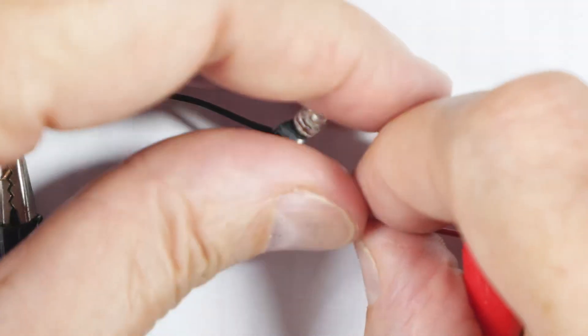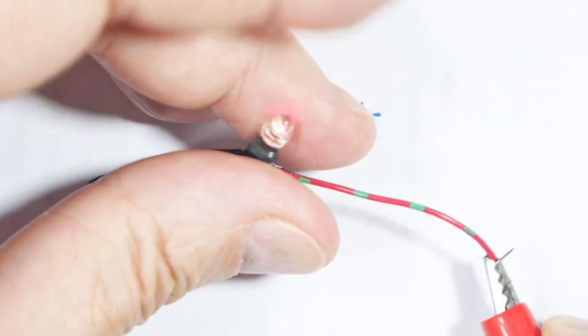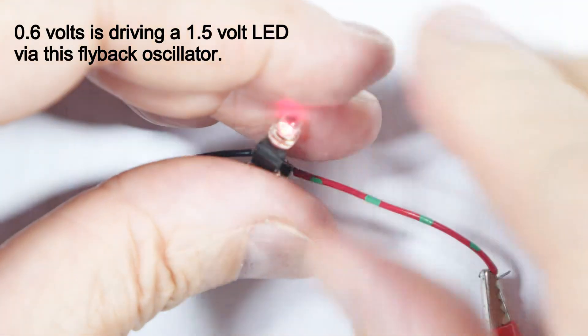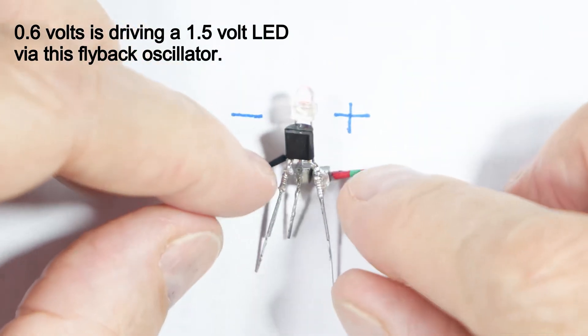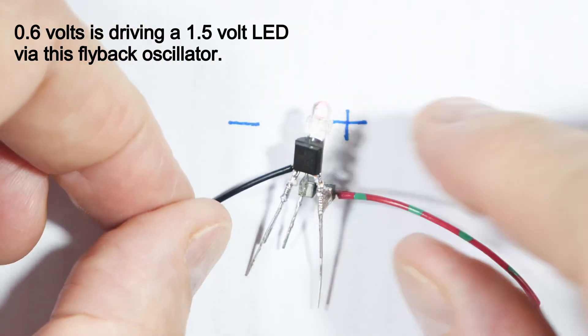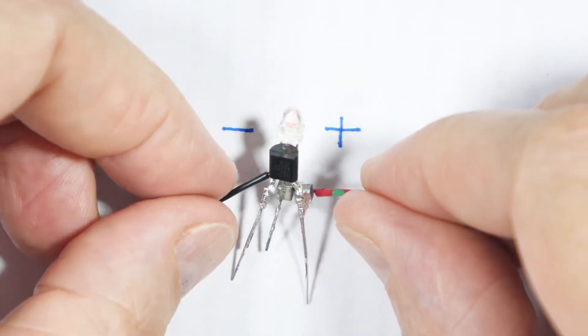Yeah, there we go! So our no-toroid jewel thief. Hope you found that useful and interesting in your home electronic experimentation.